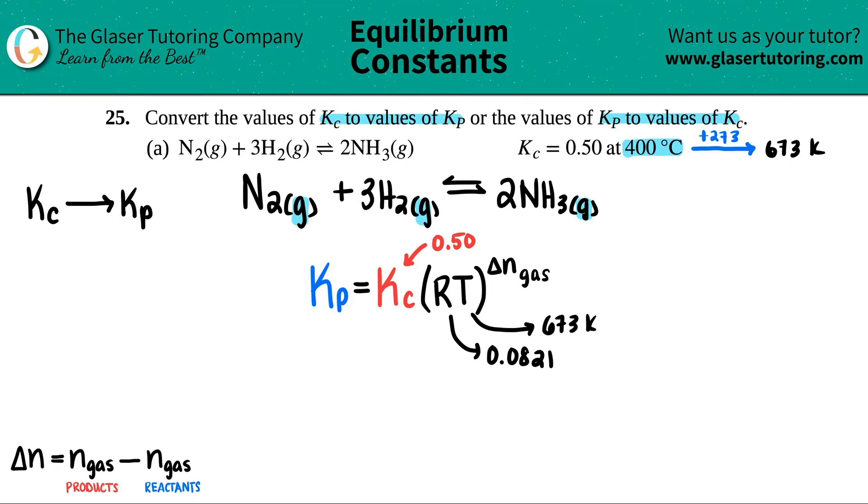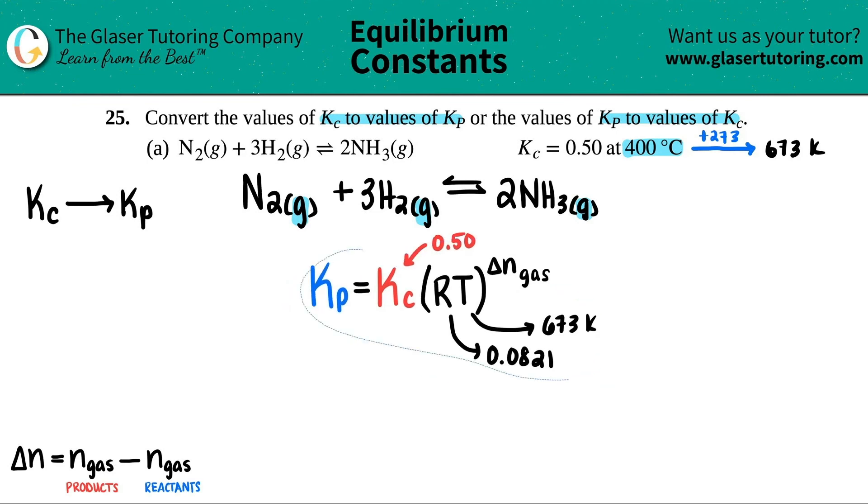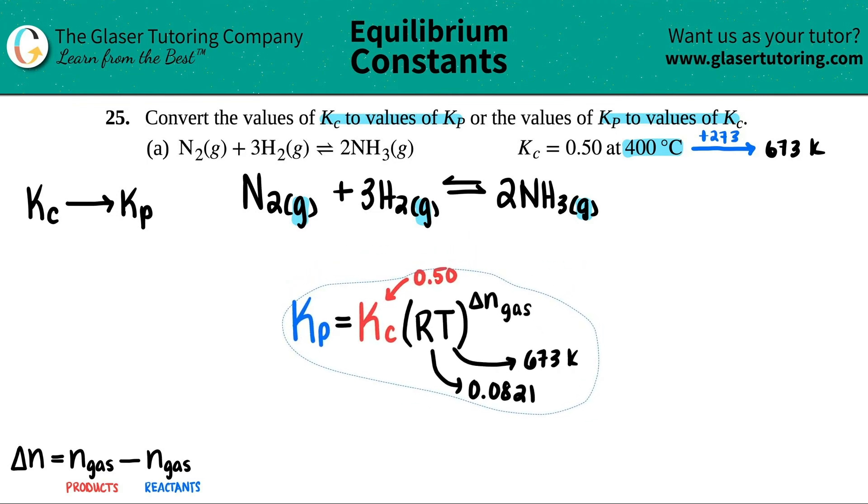Now how many moles of the gas do we have on the product side? Well there was a big two in the front. That means that I just have two moles of the gas, right? So I have two moles of the gas of the product.